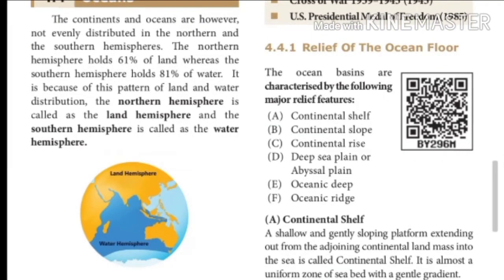We are now going to see the relief of the ocean floor. The ocean basins are characterized by the following major relief features: A. Continental shelf, B. Continental slope, C. Continental rise, D. Deep sea plain or abyssal plain, E. Oceanic deeps, and F. Oceanic ridge. Let us understand each one briefly.